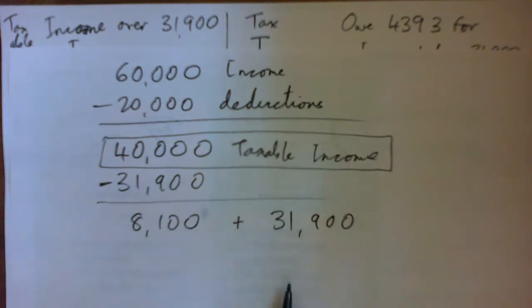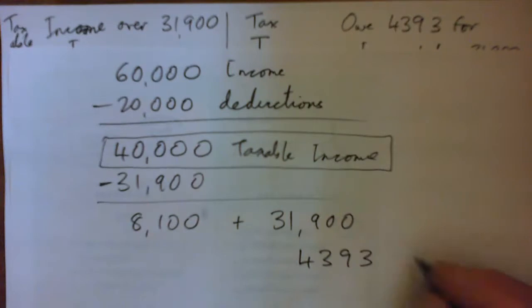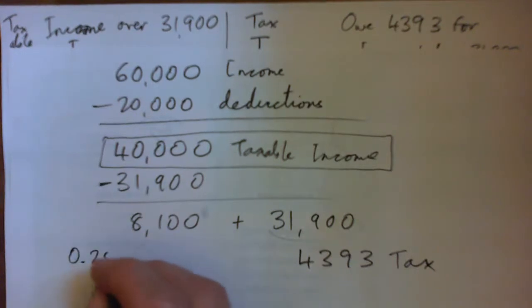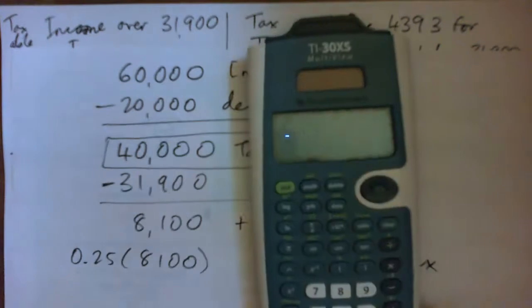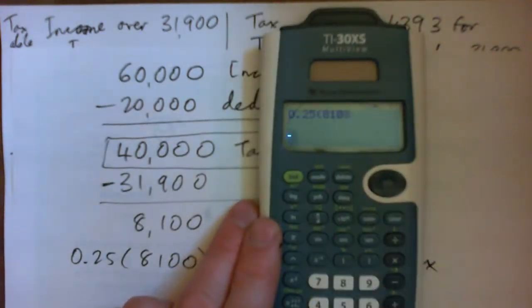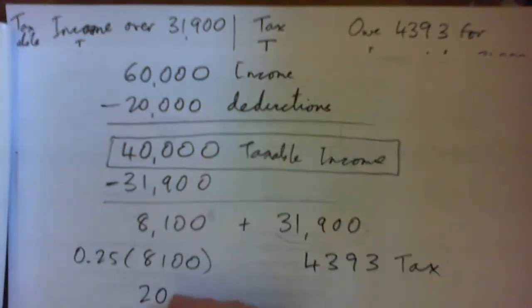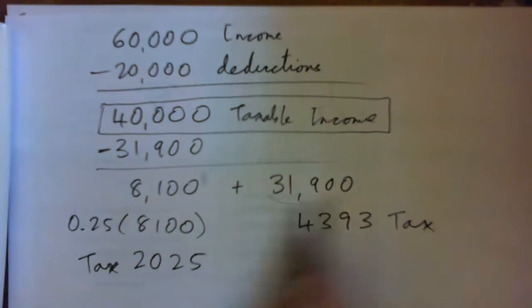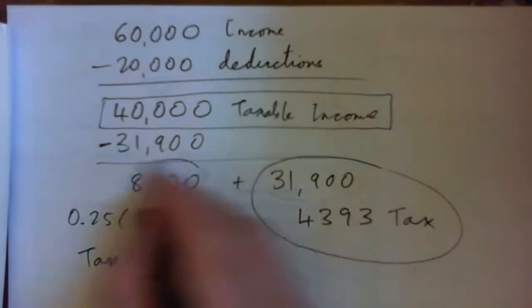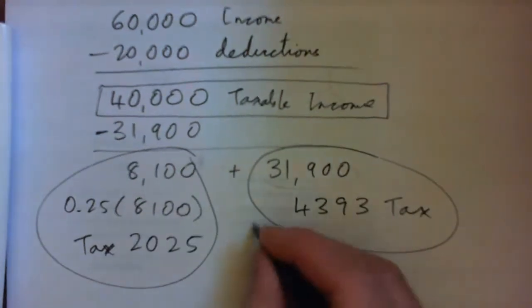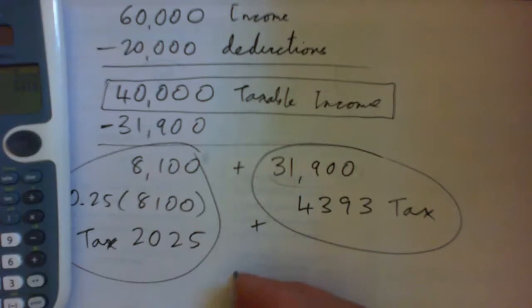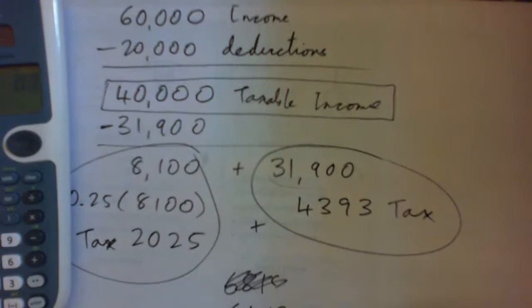On that taxable income of $40,000, you're paying $4,393 on the first $31,900, and on the extra $8,100 you pay 0.25 times $8,100 equals $2,025. Adding these together: $2,025 plus $4,393 gives a total tax of $6,418.